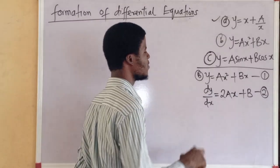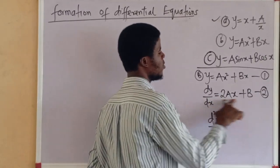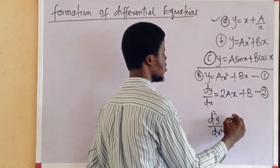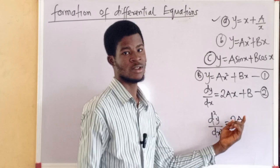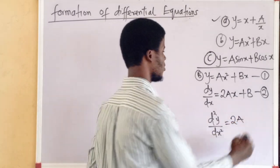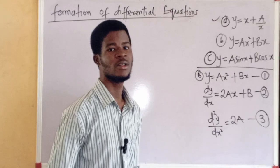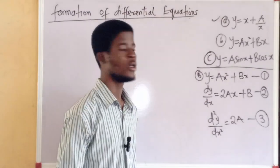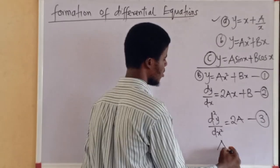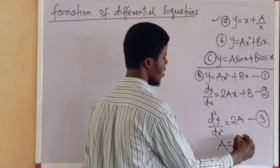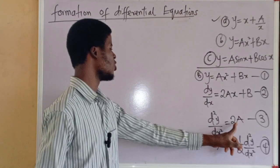So let us take the second derivative of y with respect to x — that's d²y/dx². We are going to differentiate equation 2 with respect to x. Differentiate 2ax with respect to x: we get 2a. Differentiate b with respect to x: we get 0, because b is a constant and the derivative of a constant is 0. So d²y/dx² equals 2a. Let's call this equation 3. From here I can make a the subject of the formula: a equals (1/2)·d²y/dx². Let's call this equation 4.